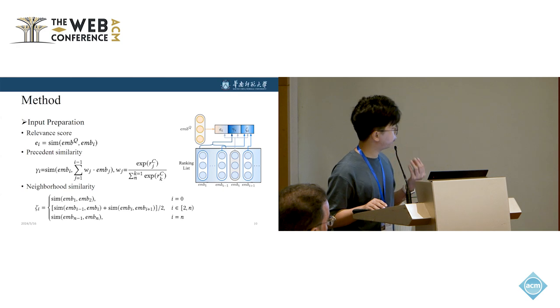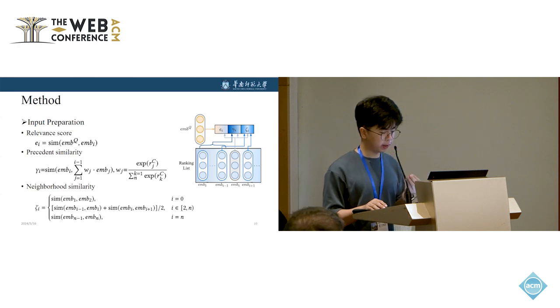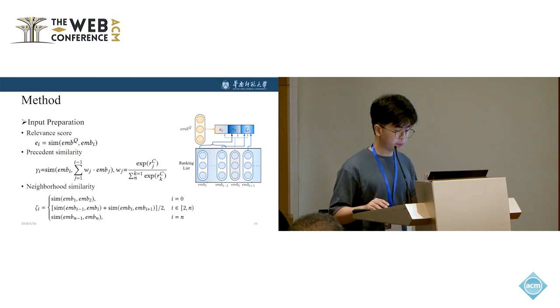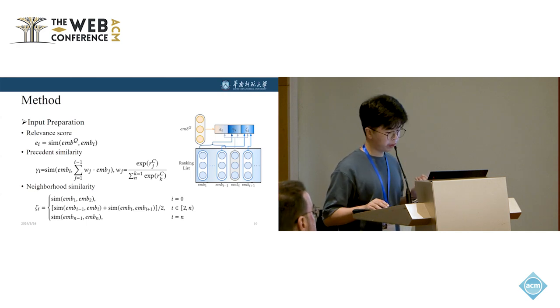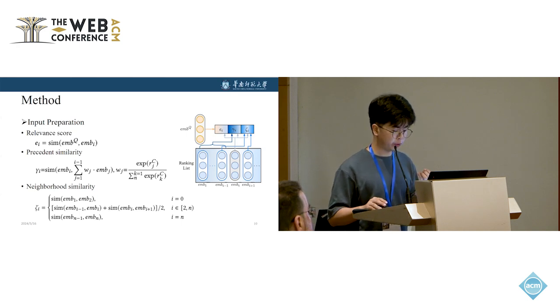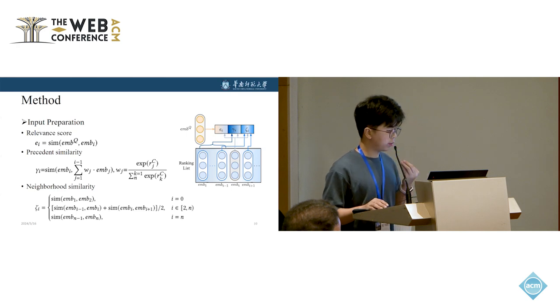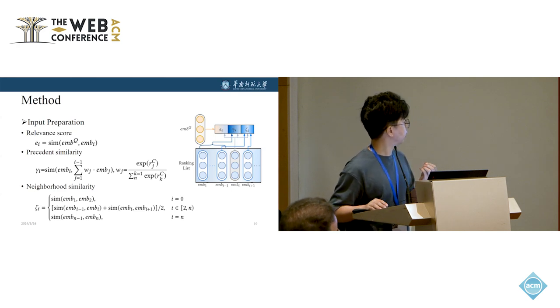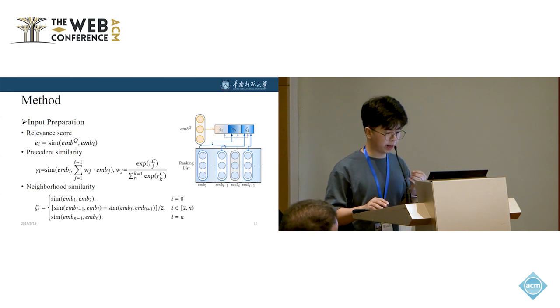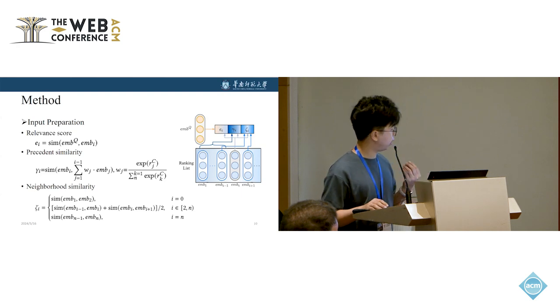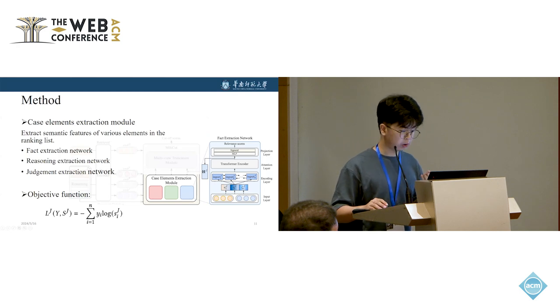Before truncation, both models employ a similar input layer to process the inputs. The inputs include the semantic representation from the retrieval encoder and statistic features. For fully exploiting the semantic information, MileCut gets element-level representation from the retrieval model. The semantic features consist of the relevance score, precedence similarity, and neighborhood similarity. The relevance score is between query and case. The precedence and neighborhood similarity is between a case and its precedence and neighborhood cases. These scores are calculated by a similarity function, such as dot product or cosine similarity.